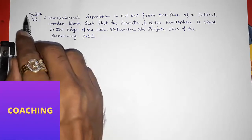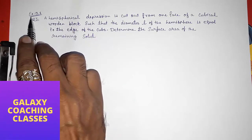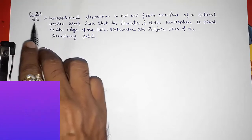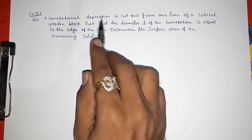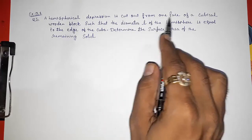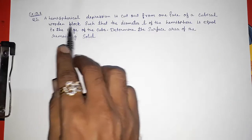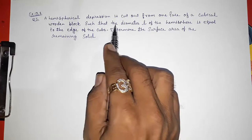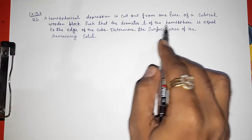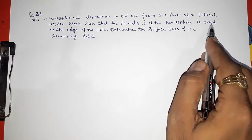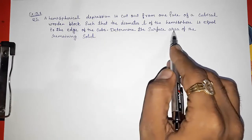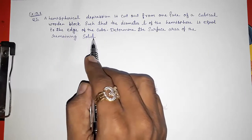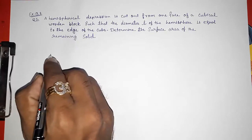Hello friends, today we are going to solve CBSE class 10th exercise 13.1 question number 5. A hemispherical depression is cut out from one face of a cubical wooden block such that the diameter L of the hemisphere is equal to the edge of the cube. Determine the surface area of the remaining solid.